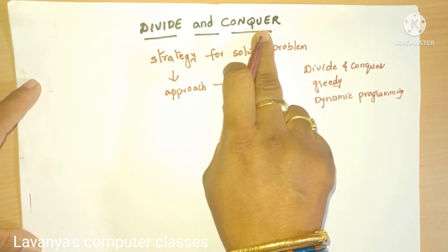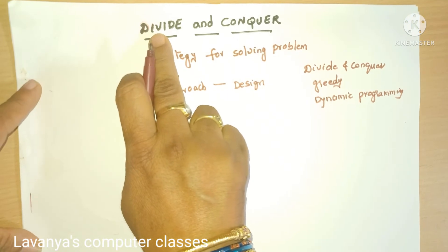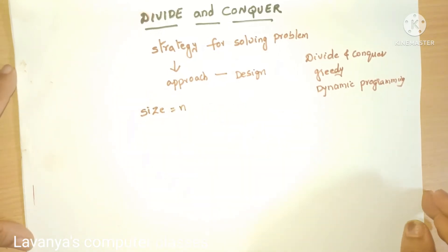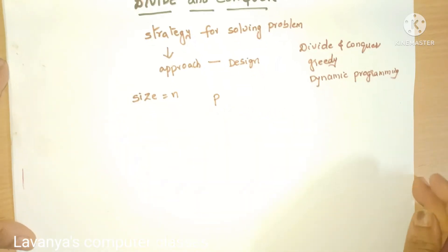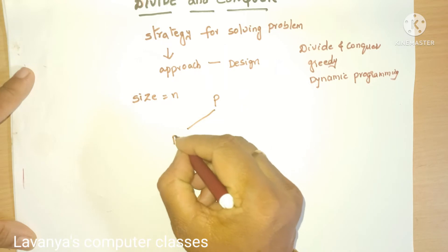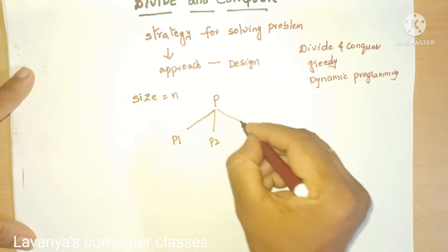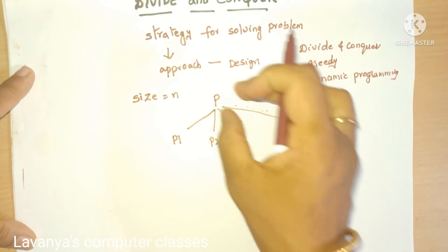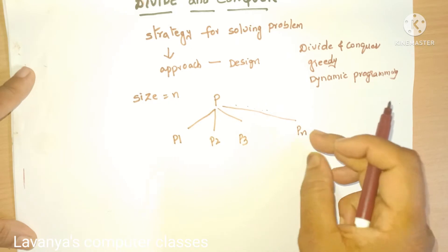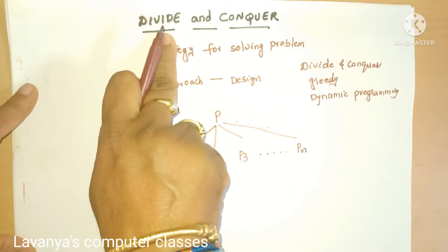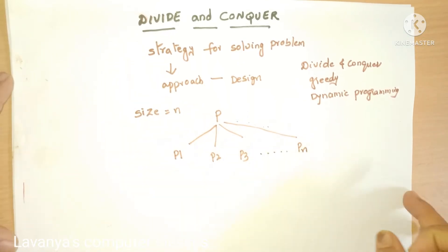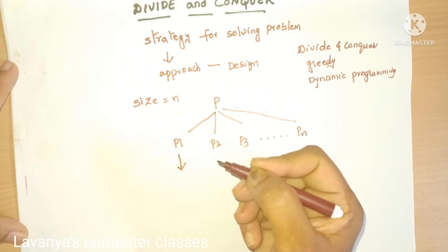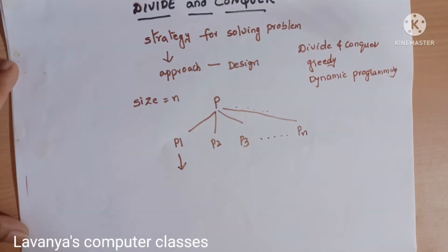But how can you conquer? If you want to conquer any problem, the problem will be divided into sub-problems. For example, any problem with size n — that is a very big problem. The big problem P will be divided into sub-problems P1, P2, P3, and so on up to Pn. One large problem is divided into sub-parts. If the problem is small, the solution is very easy. If the problem is big, it is divided further.